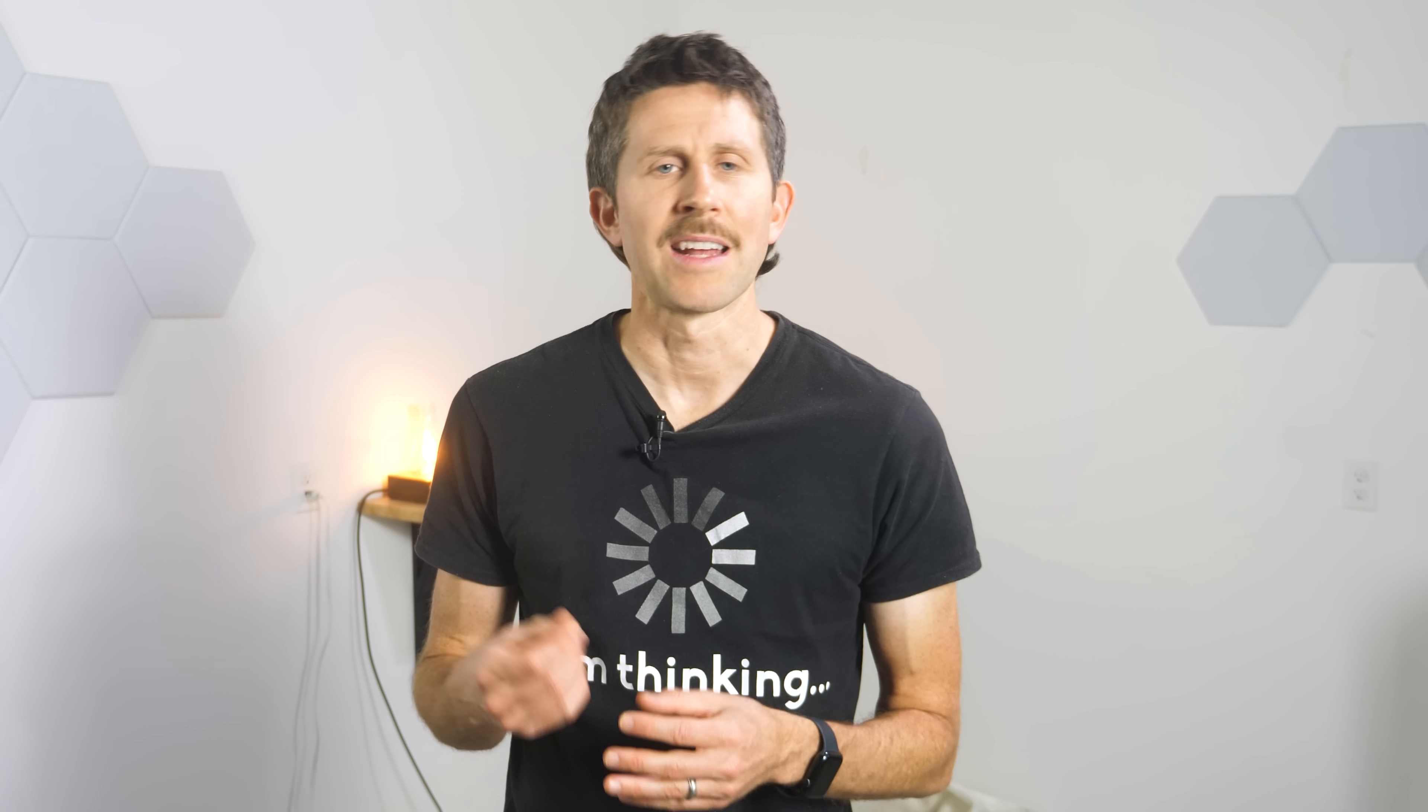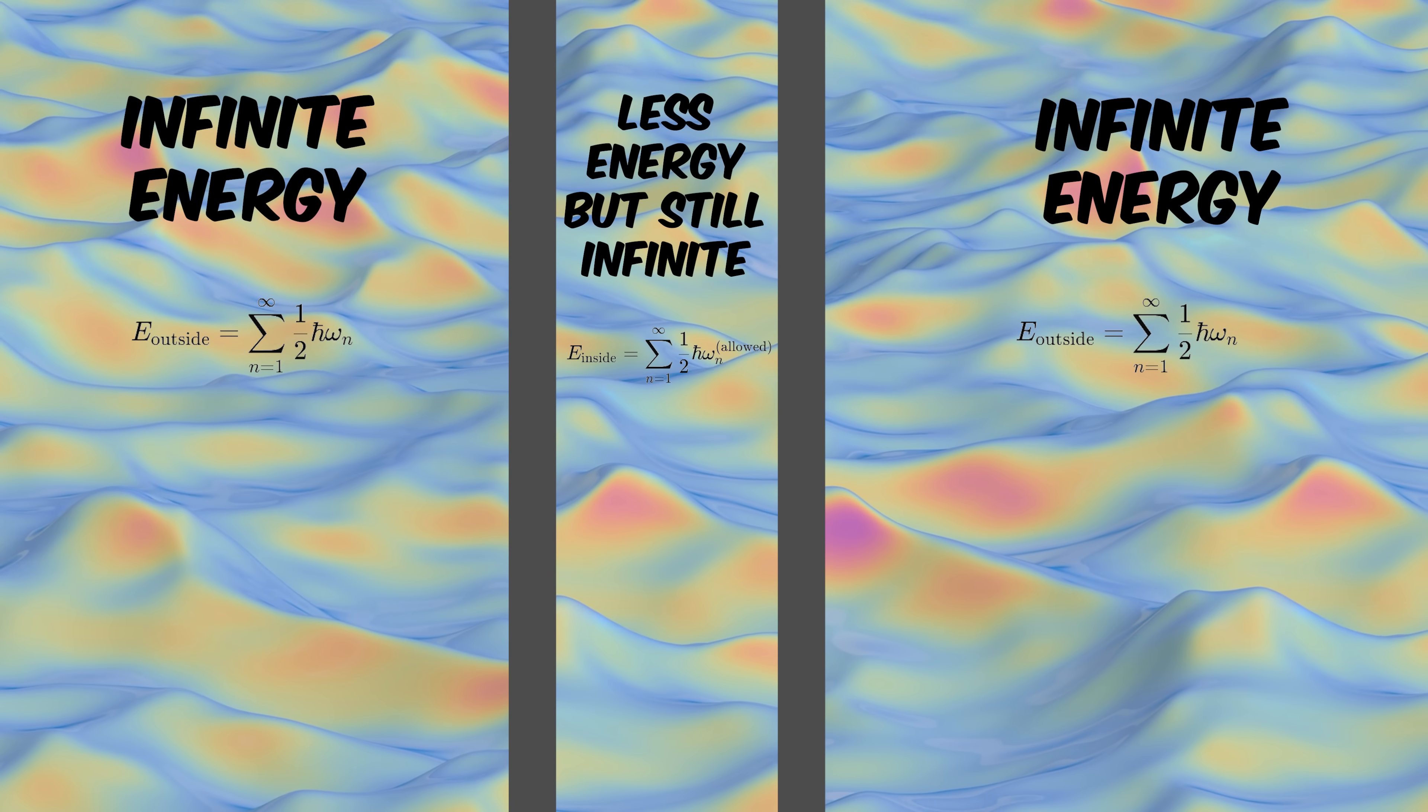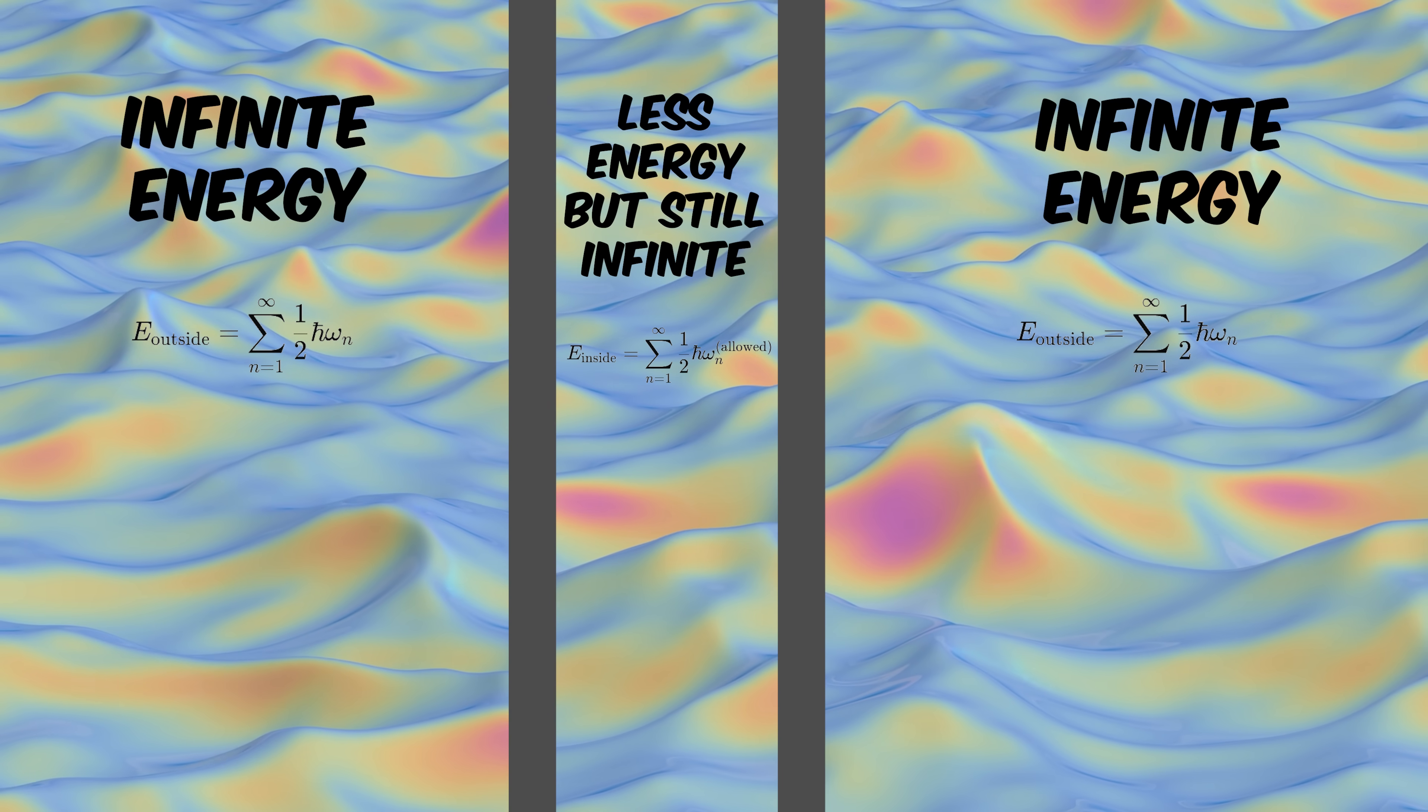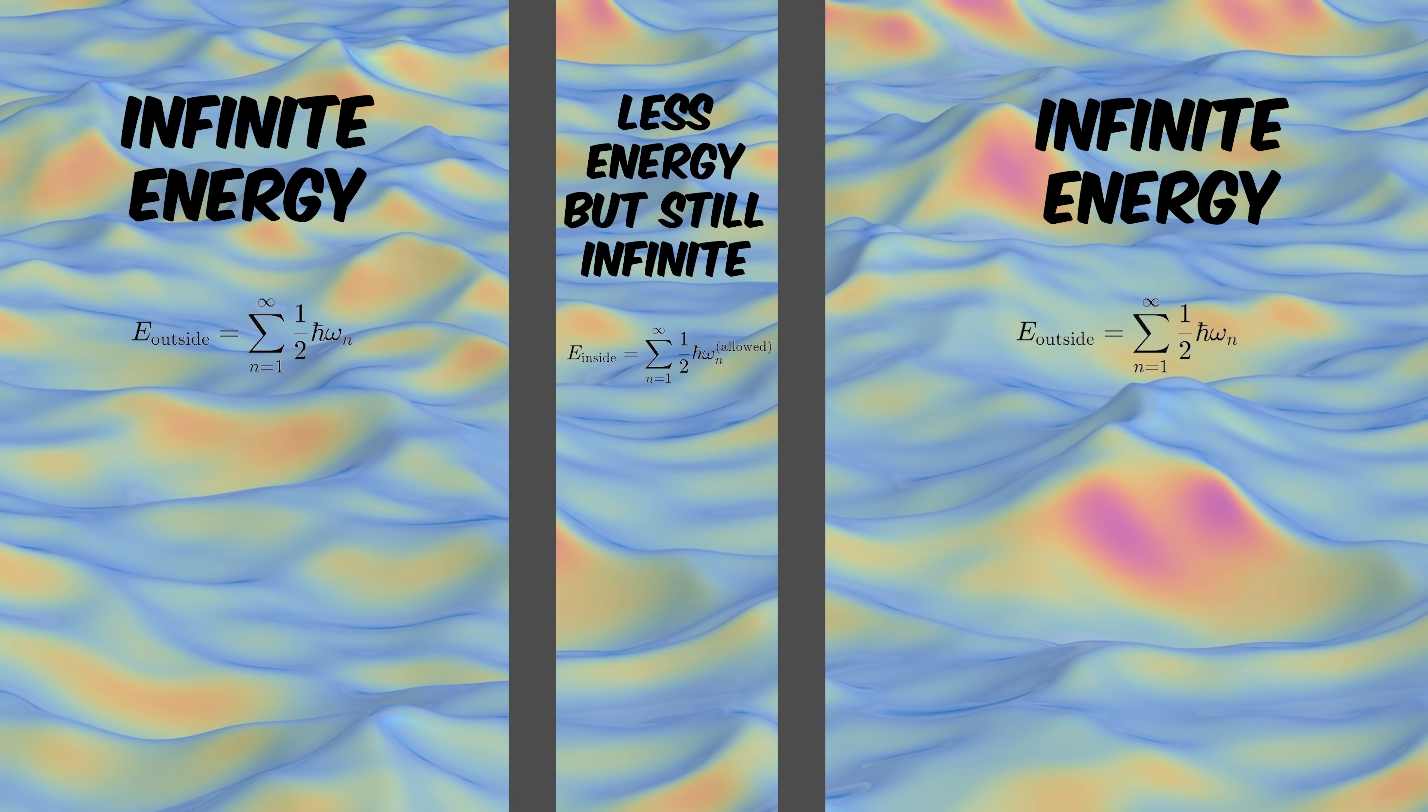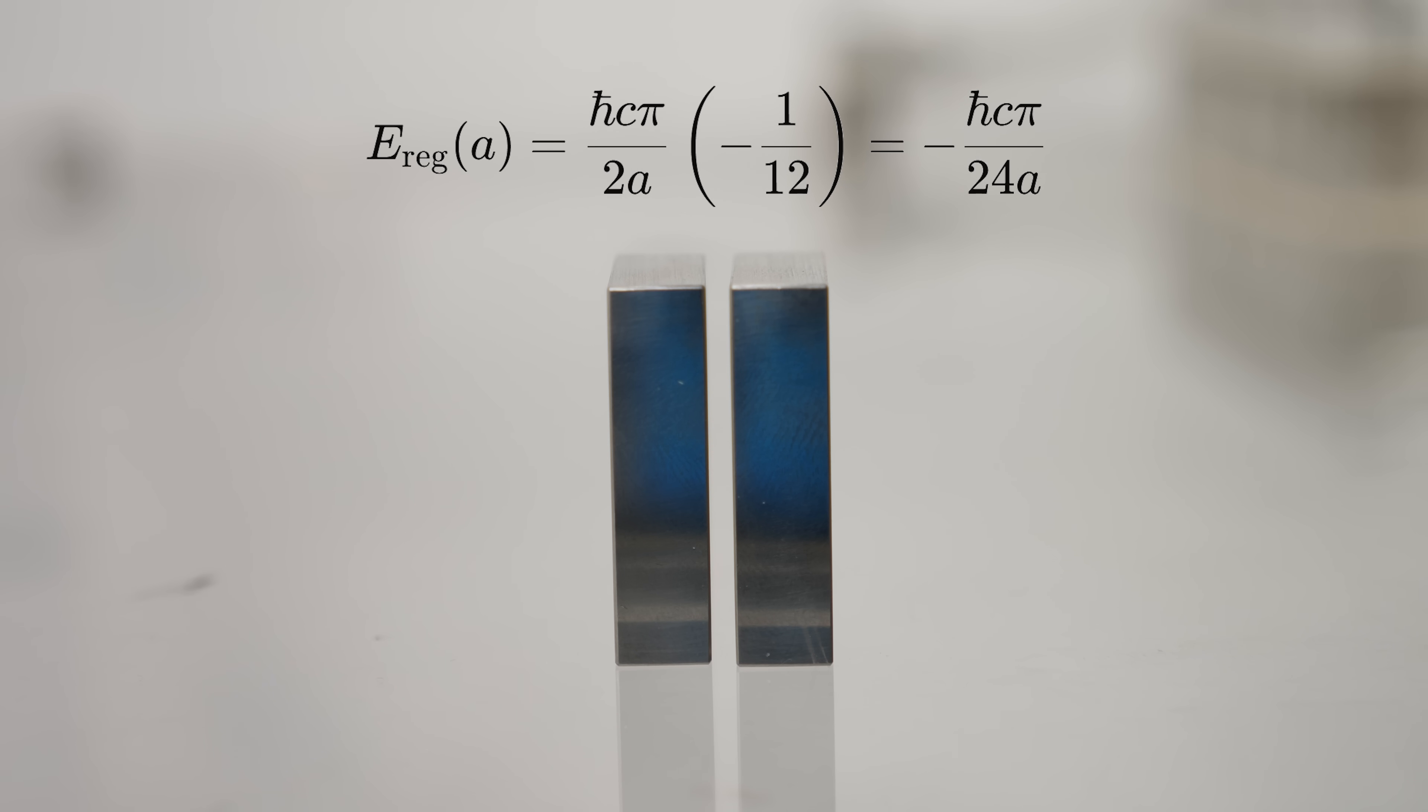Now normally this would be a problem to say that something has infinite energy. But in quantum physics, we never talk about the absolute energy of something. We always talk about the difference in energies. In this case, we want to know the energy difference between the inside and the outside of the plates. Inside the plates, we also have infinitely many modes, which means infinite energy as well. But there are slightly fewer modes available, which means slightly less energy. So the calculation of the energy becomes infinity minus a little less infinity. It predicts the Casimir force perfectly.